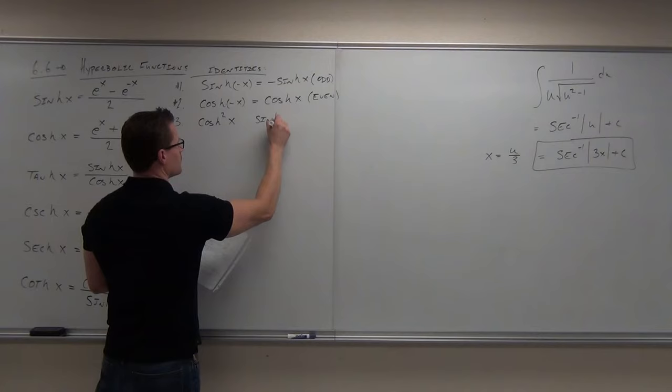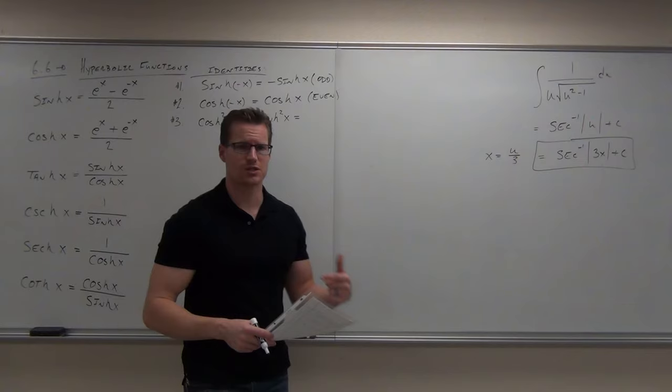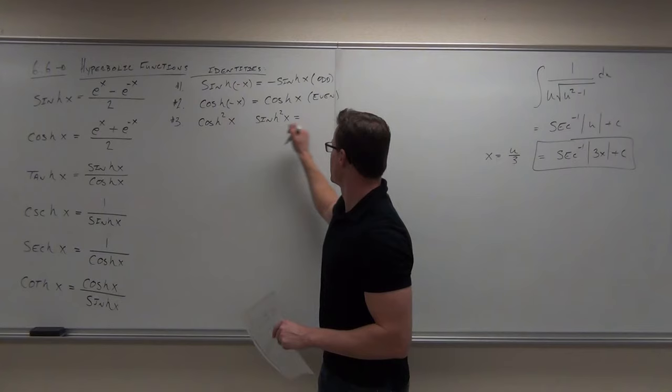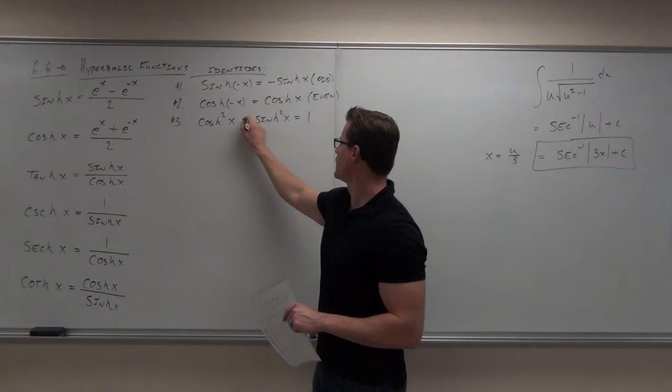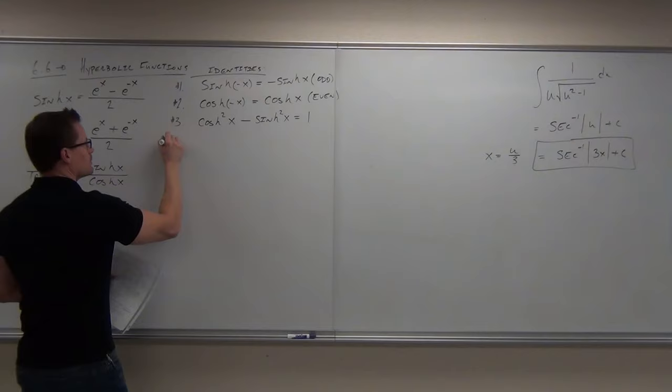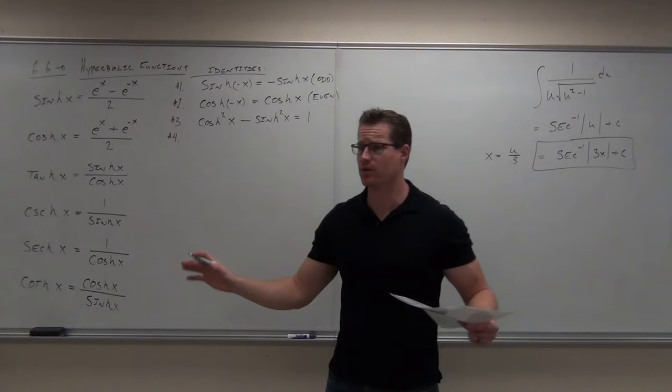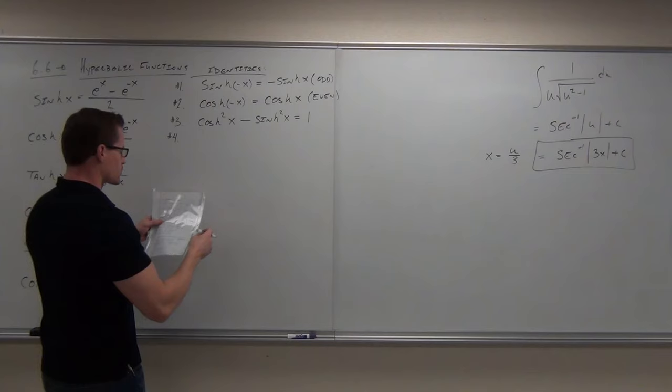This is where some differences happen. The Pythagorean identity for trig functions has a plus — cosine squared plus sine squared equals one. For the hyperbolic version, it's a minus. That's why I'm telling you to have these next to your paper when you're working. They're a little bit different.